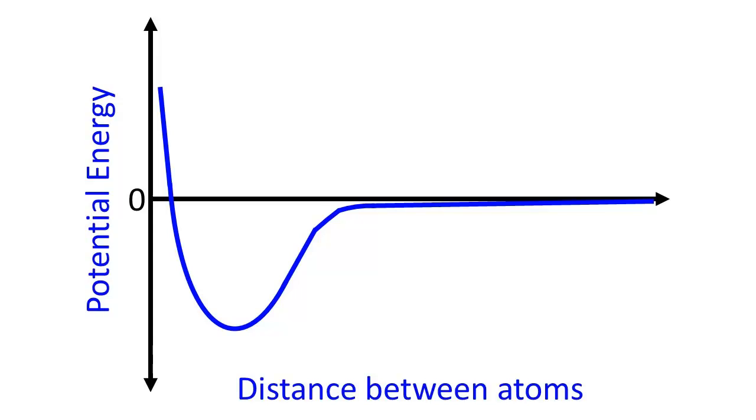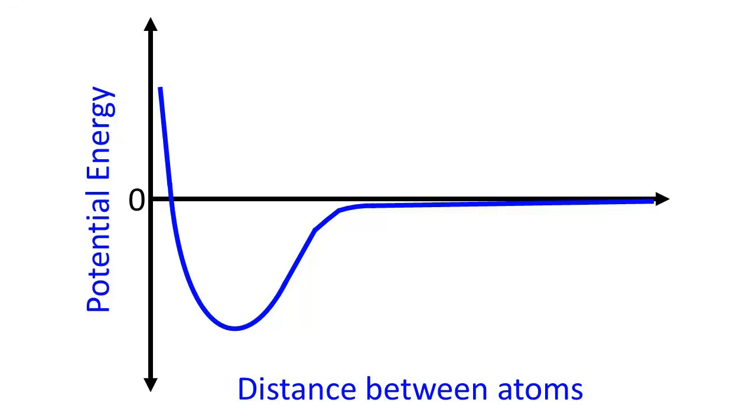At a certain point, we reach a valley — a local minimum in potential energy on this graph. This minimum is what I call the sweet spot: that's the distance between the atoms where the most favorable interactions are taking place. The attractive forces between the electron cloud of one atom and the nucleus of another are the dominant forces, so the decrease in potential energy due to those attractions dominates over any repulsive forces between the electron clouds or the nuclei. After reaching that minimum, the potential energy starts to climb upward again and approaches zero, because as the atoms get further and further apart they feel each other less, but mathematically it never quite reaches zero.